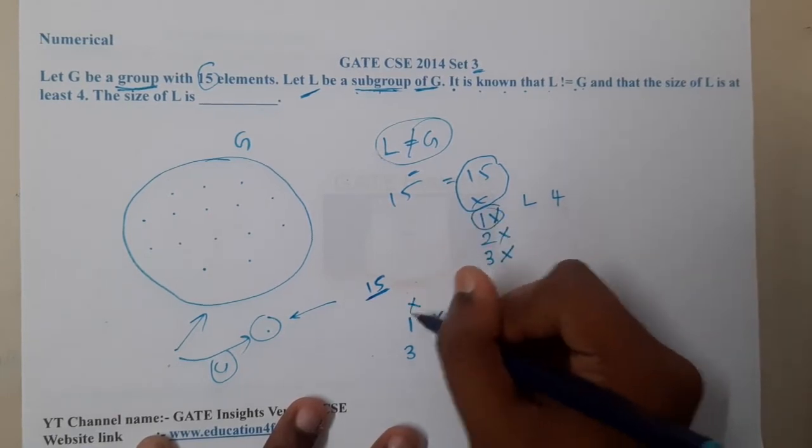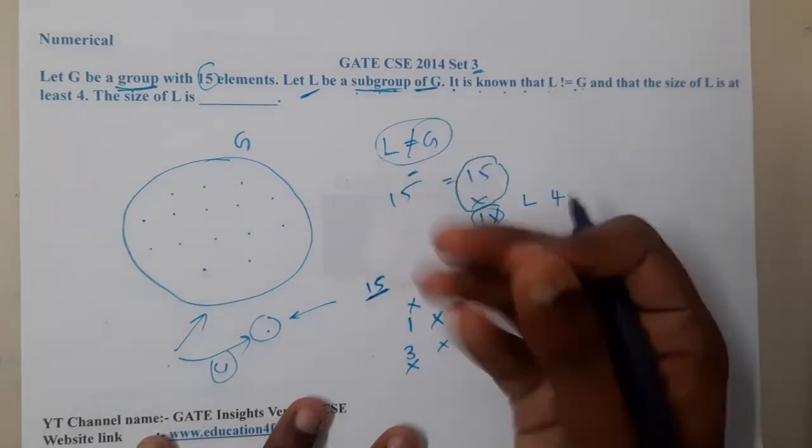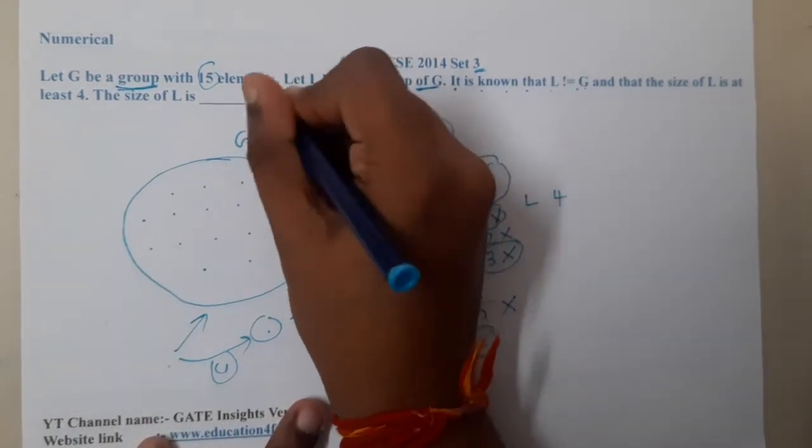They clearly told that 1 is not possible, you can strike off that. They clearly said 3 is not possible, you can strike off that. So we are indirectly left with 5 only. Hence, 5 will be the correct answer. Got it?